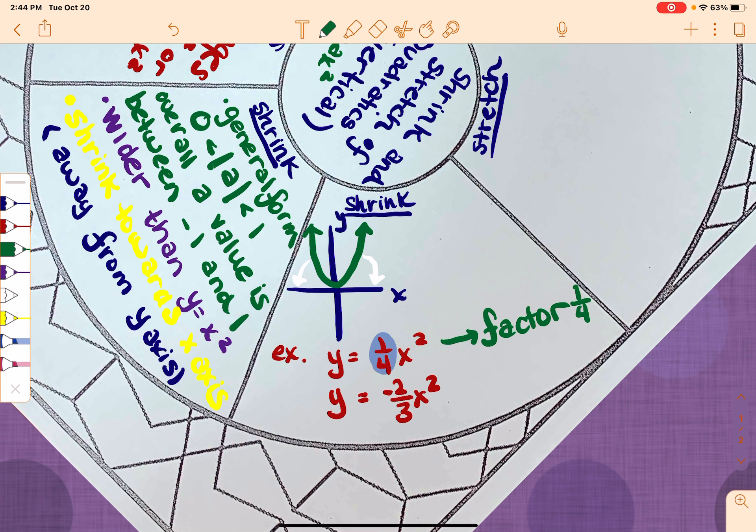Now, the big thing for us is a factor always has to be positive. So in this case, where that a value is negative two-thirds, when we talk about the factor, we're going to say the factor is two-thirds. Always take the positive version of that. Okay, so those are the big ideas about shrink.